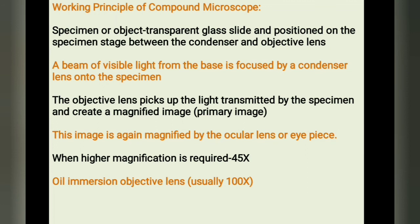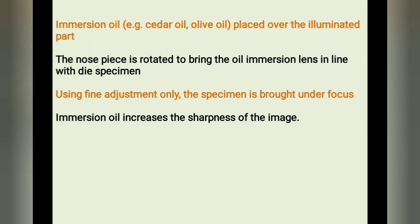Occasionally, very high magnification is required. In that case, the oil immersion objective lens — usually 100x — is employed. After focusing under low power, a drop of immersion oil, such as cedar wood oil or olive oil, is placed over the illuminated part of the cover slip. The nosepiece is rotated to bring the oil immersion lens in line with the specimen. It comes in contact with the oil, and only fine adjustment is used to bring the specimen under focus. Immersion oil increases the sharpness of the image. Soon after observation, both the lens and the slide are cleared of the oil using fine cotton cloth or lens paper.